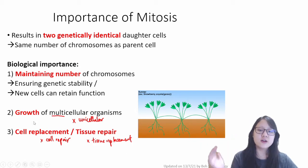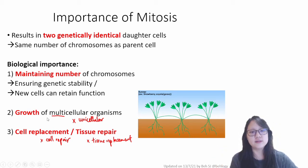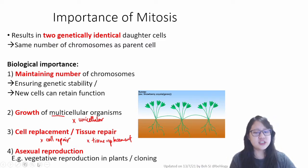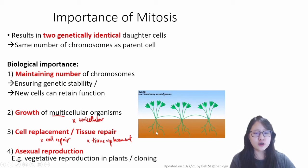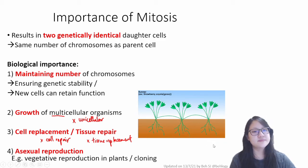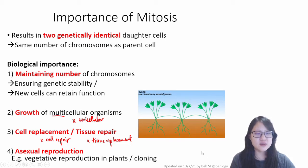Other than growth, cell replacement, and tissue repair, there is also asexual reproduction. This is especially applicable to plants which reproduce by vegetative reproduction or cloning. You can see runner plants like strawberry or some form of grass — they propagate in this manner using mitosis. They don't undergo sexual reproduction. Those are the main points of importance of mitosis.